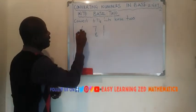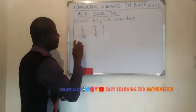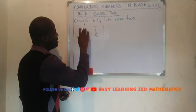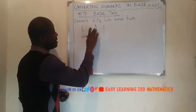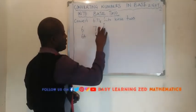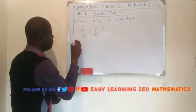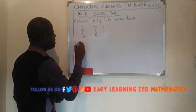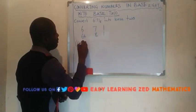So now what we need to do next is let's multiply this number 6 by its place value, and this number 7 by its place value, and this one by its place value. So I'm going to say, open bracket, 6 by 64.